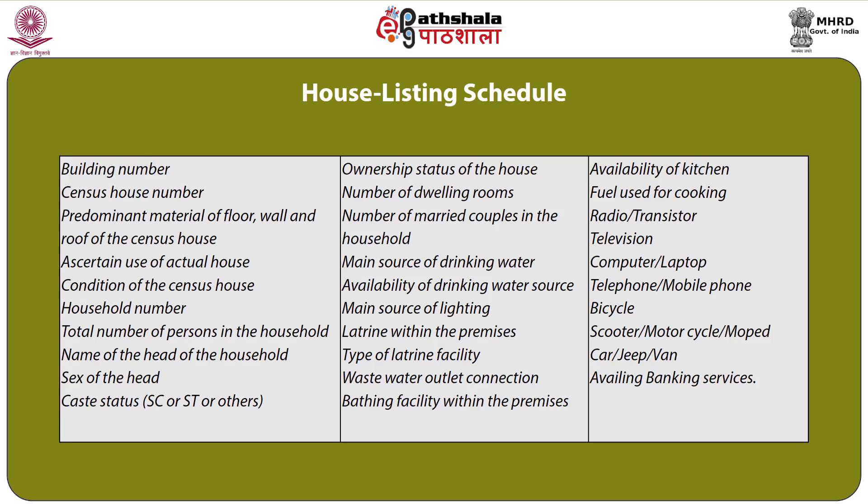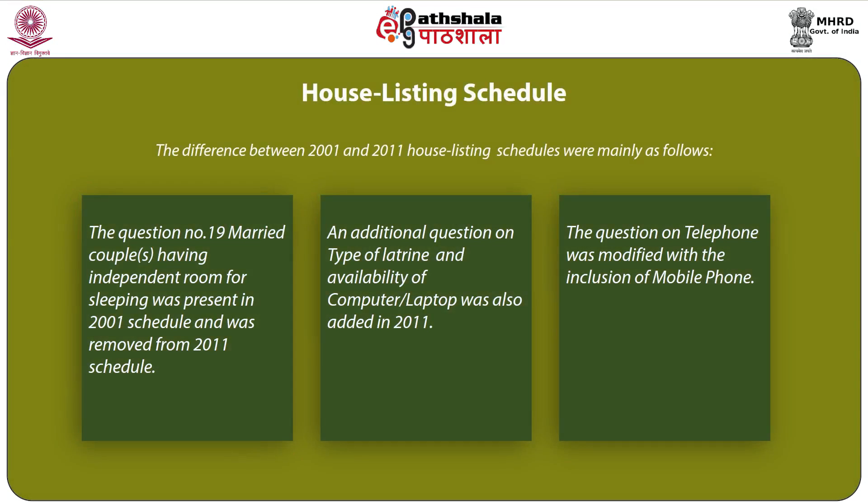The schedule also covers assets such as radio or transistor, television, computer or laptop, telephone or mobile phone, bicycle, scooter, motorcycle or moped, car, jeep or van, and availability of banking services. The differences between the 2001 and 2011 house listing schedules were mainly as follows: the question on married couples having independent room for sleeping was removed from the 2011 schedule, while questions on type of latrine and availability of computer or laptop were added. The question on telephone was also modified to include mobile phone.